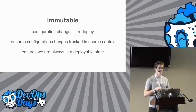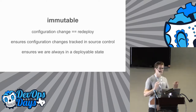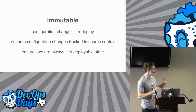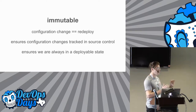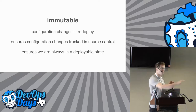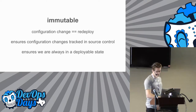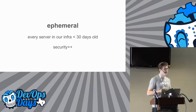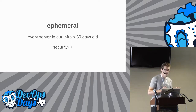So we can't get into some really funky state where somebody hacks on something and didn't know how they're going to roll back. We can always prove how we got there and how we can redeploy a service. Ephemeral means that every server in our infrastructure is under 30 days old.